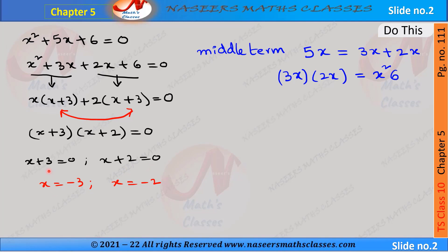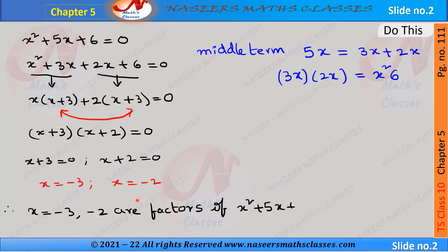We get (x + 3)(x + 2) = 0, which gives x + 3 = 0 and x + 2 = 0. Transposing, we get x = -3 and x = -2. Therefore x = -3 and x = -2 are the roots of the quadratic equation x² + 5x + 6 = 0.